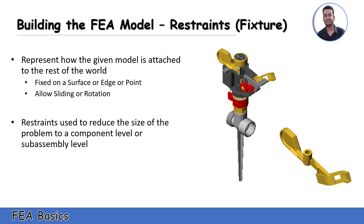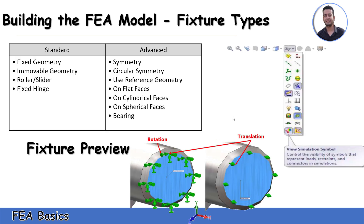Fixtures are used to restrain a surface, edge, or point, or to allow sliding or rotation. Restraints or fixtures are also used to reduce the size of the problem at the component level. The fixture types are divided into standard and advanced, which we will talk about later. The preview of fixtures looks like this.